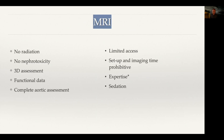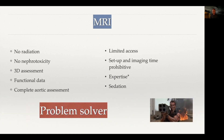MRI — I'll talk about this because I think it's important, not in the acute phase, but more in the subacute and chronic phase. There's no radiation, no nephrotoxicity, you get a 3D assessment of the aorta, functional data showing flow direction and flow velocity, and a complete aortic assessment. But you're limited in terms of access and expertise, and you want radiologists who are very comfortable interpreting aortic pathology using advanced MRI techniques. Setup and imaging time can be very prohibitive. I do not use MRI at all in my acute workup — but definitely post-treatment and in the subacute phase, it can be extremely helpful.